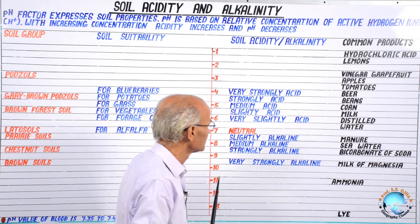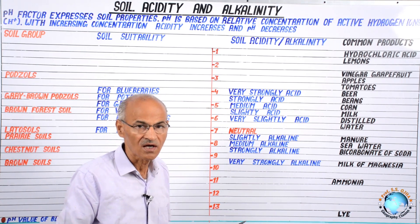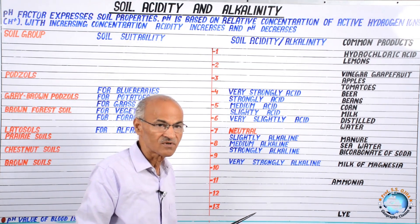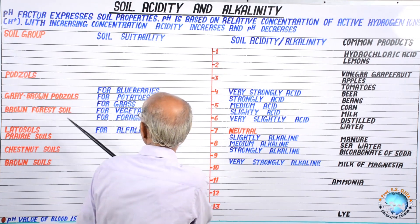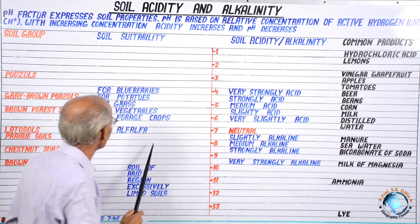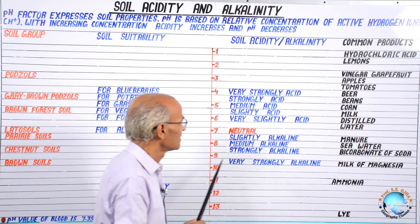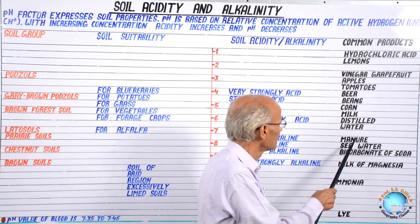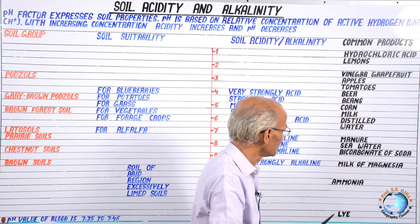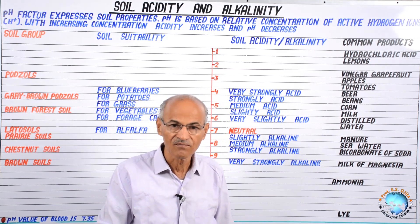From neutral towards alkaline: manure is more alkaline than neutral, then sea water or marine water, then bicarbonate of soda, then milk of magnesia, and then ammonia. At the extreme end is lye, which is very saline or alkaline. This is the pH value which indicates the chemical property of soil, on the basis of which we study soil chemistry and determine which crops or vegetation are suitable.